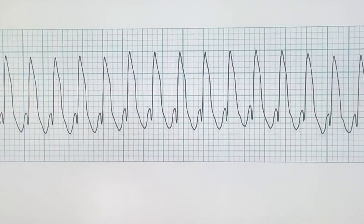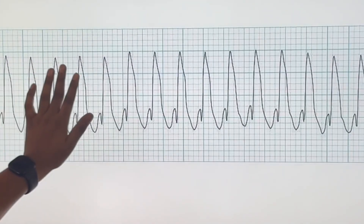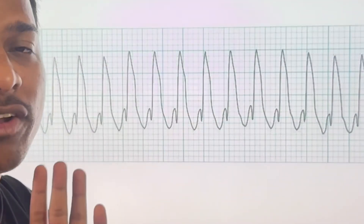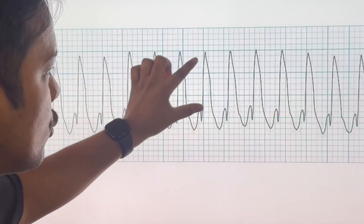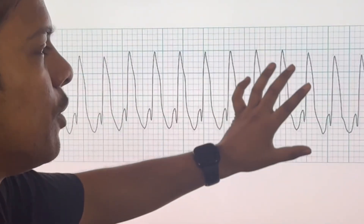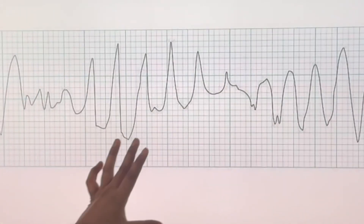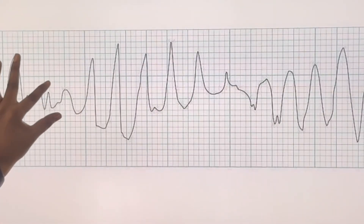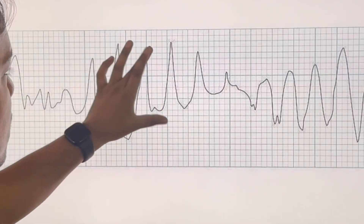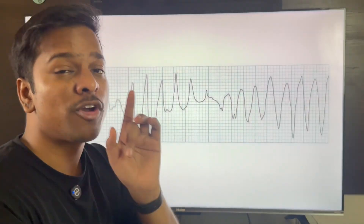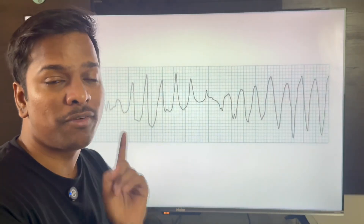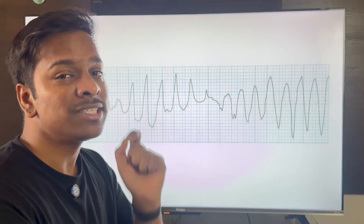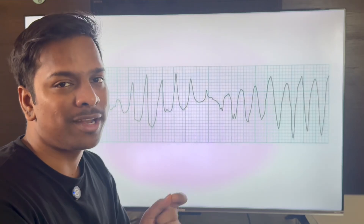In this ECG, there is a single focus — this is called monomorphic ventricular tachycardia because the morphology of the QRS complex is the same throughout. In this next ECG, the morphology of the QRS is different for each complex, so this has to be polymorphic ventricular tachycardia.